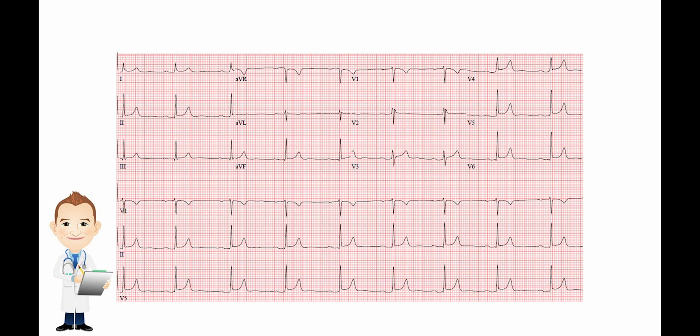In this next EKG, you're looking at a rate that's a little bit bradycardic. Counting the complexes: 1, 2, 3, 4, 5, 6, 7, 8, 9 — nine times six is 54. So this is classified as bradycardic.